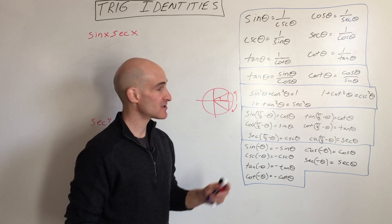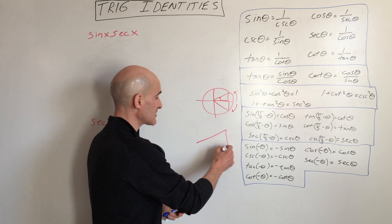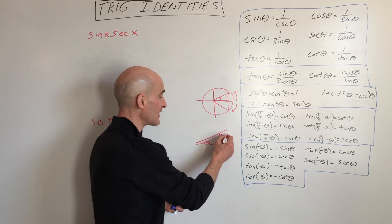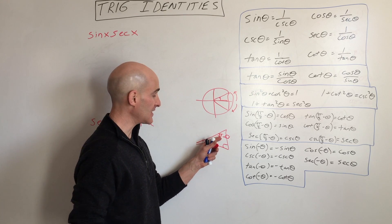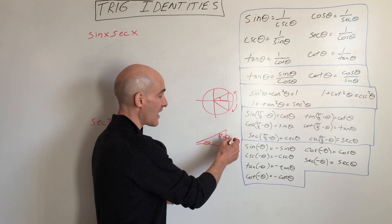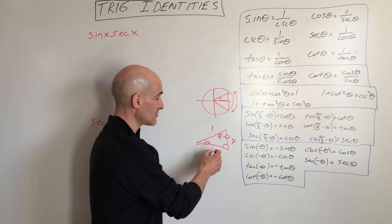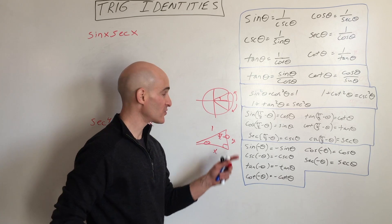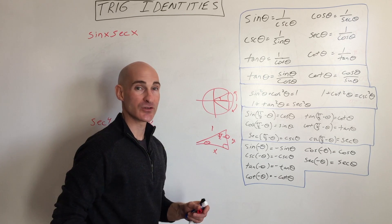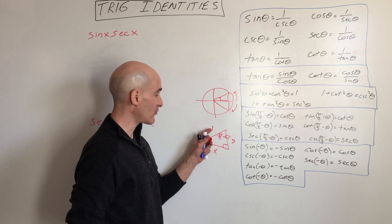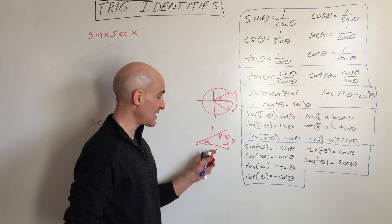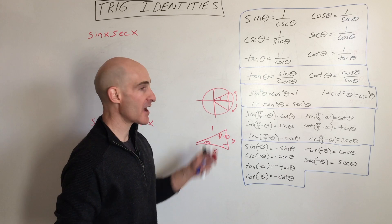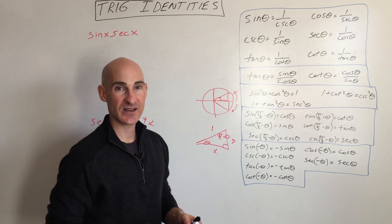You can draw diagrams to understand the co-functions too. In a right triangle, if one angle is theta, the other is 90 minus theta because the two angles add up to 90. Sine is opposite over hypotenuse, and cosine of 90 minus the angle is adjacent over hypotenuse — you get y over 1 for both. Sine of 90 minus theta is opposite over hypotenuse, giving x over 1. That's why they're equivalent — you can draw triangles to understand why these identities work.